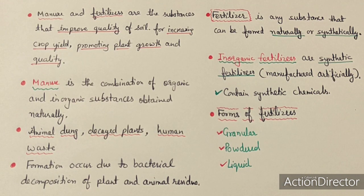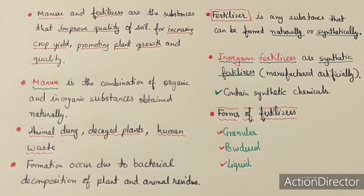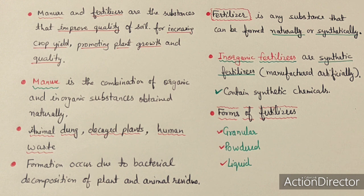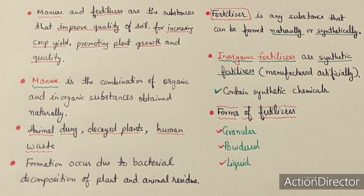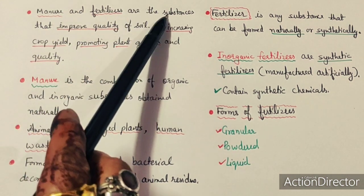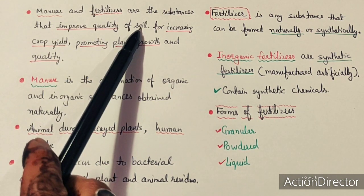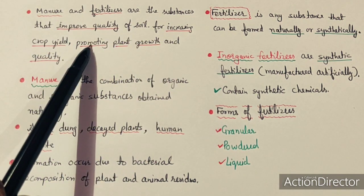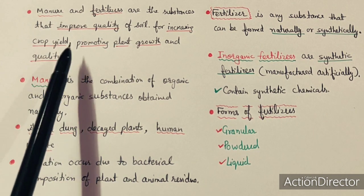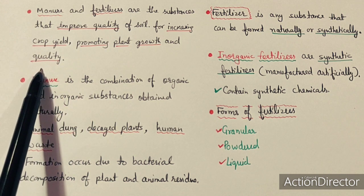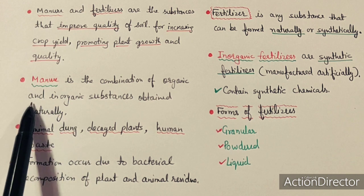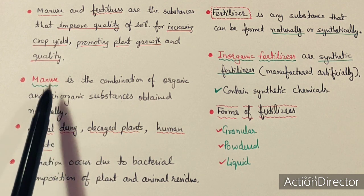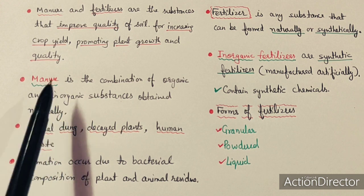Now we look at the difference between manure and fertilizers. Both are substances that improve the quality of soil, increase crop yield, and promote plant growth and quality. Manure is a combination of organic and inorganic substances obtained naturally — from animal dung, decayed plants, and human waste. The formation of manure occurs due to bacterial decomposition of plant and animal residue. Manure is essentially a naturally formed substance containing organic as well as inorganic substances.